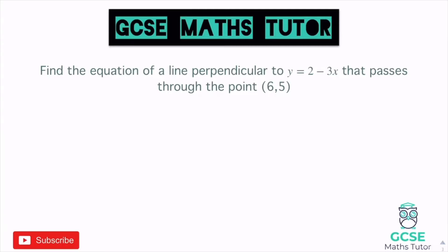Find the equation of a line perpendicular to y equals 2 minus 3x that passes through the point (6, 5). First, let's get the gradient: it's written in a slightly different way, but the gradient is −3, the number in front of x. For a perpendicular line we change it to positive and flip it over, so the perpendicular gradient is one third.